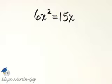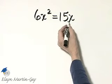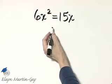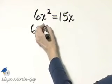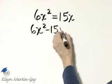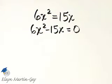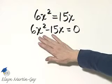Let's solve this quadratic equation. All right, I'll write it in standard form first. So subtract 15 from both sides, 15x. So that's 6x squared minus 15x is equal to 0. It's now in standard form.